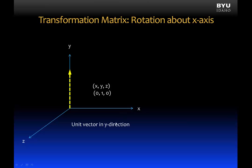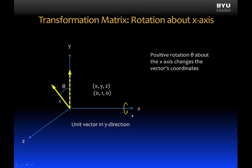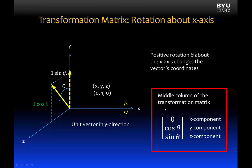Now consider a unit vector drawn in the y-direction with coordinates 0, 1, 0. When we rotate the unit vector about the x-axis in the positive theta direction, the vector coordinates change. The y-component becomes 1 times the cosine of theta, and the z-component becomes 1 times the sine of theta, while the x-component remains 0. We write these new coordinates as a vector — the middle column of the transformation matrix: x-component 0, y-component cosine of theta, z-component sine of theta.